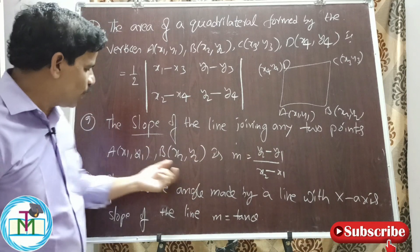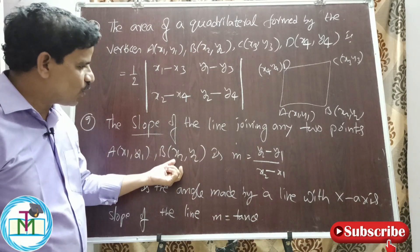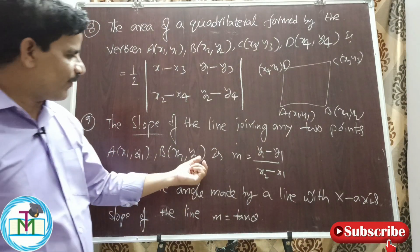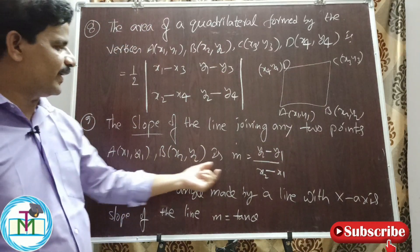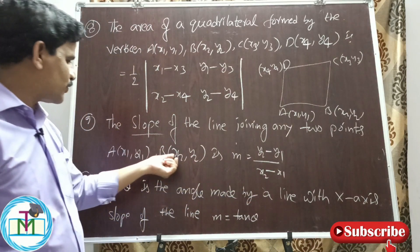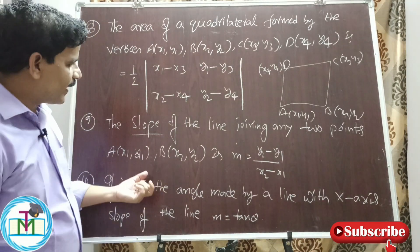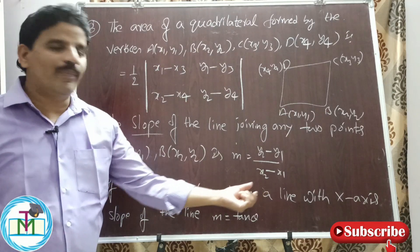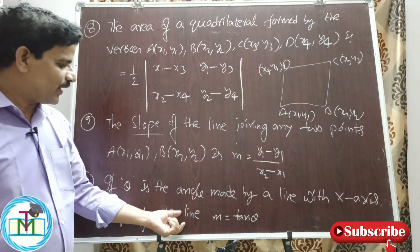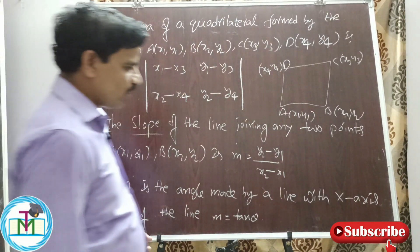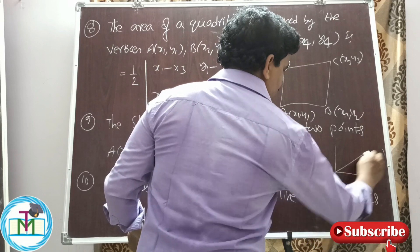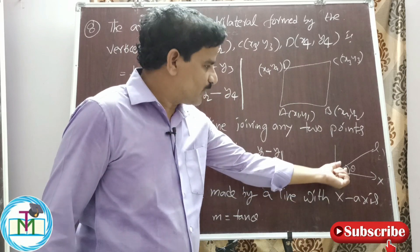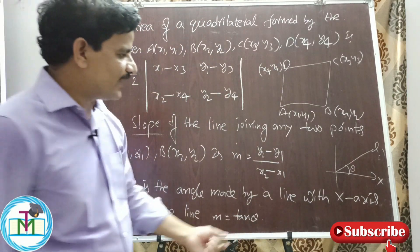Formula number nine: the slope of a line joining any two points A(x1, y1) and B(x2, y2) is m = (y2 − y1)/(x2 − x1) — very, very important. This is the difference of y-coordinates divided by the difference of x-coordinates. Formula number ten: if theta is the angle made by a line with the x-axis, then the slope of the line is m = tan(θ).